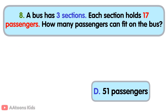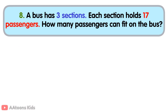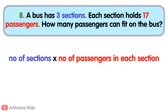Fifty-one passengers. To find the total number of passengers, multiply the number of sections by the number of passengers each section can hold. Total number of sections is three. Number of passengers each section holds is seventeen. Now, three multiplied by seventeen is fifty-one. So, fifty-one passengers can fit on the bus.